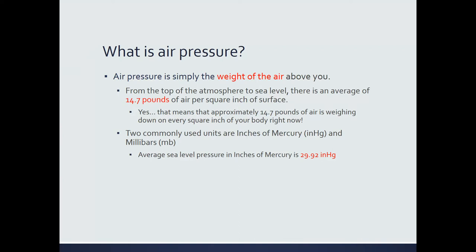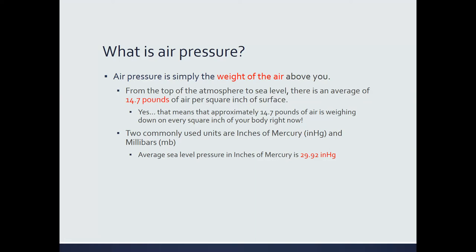We want to know a lot about air pressure, and because of this, we want to measure it. There are two main units used for measuring air pressure. The first set of units are the ones used here in the United States, called inches of mercury. The average sea level pressure in inches of mercury is 29.92 inches of mercury. Anything higher than that is considered higher than average; anything lower is considered lower than average. However, this unit is not commonly used by meteorologists.